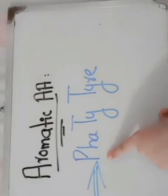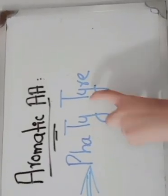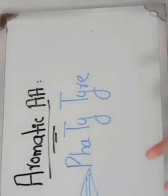To remember the aromatic amino acids, we have to remember this: Fote Tyre. P for phenylalanine, T for tyrosine, T for tryptophan. These three are aromatic amino acids.